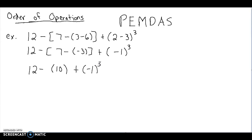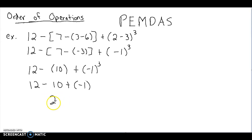Even though there are still parentheses in the expression, when we talk about parentheses it means operations within them — so technically we're done with the parentheses step. We move on to exponents: we need to do negative 1 to the third power, which is negative 1. So now we have 12 minus 10 plus negative 1. The common mistake is to do 10 plus negative 1 first, but since subtraction comes first, we do 12 minus 10, which is 2. Then 2 plus negative 1 gives us 1.